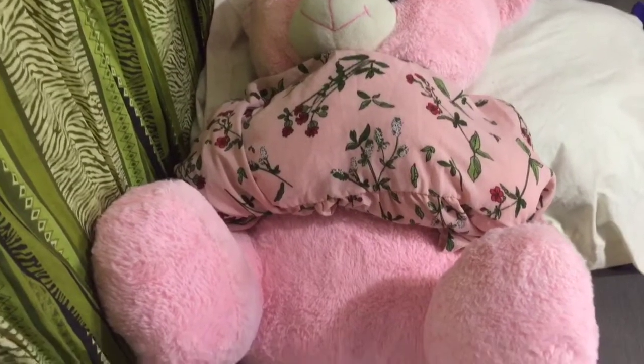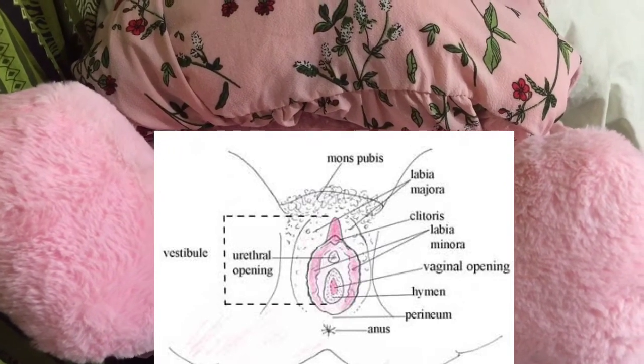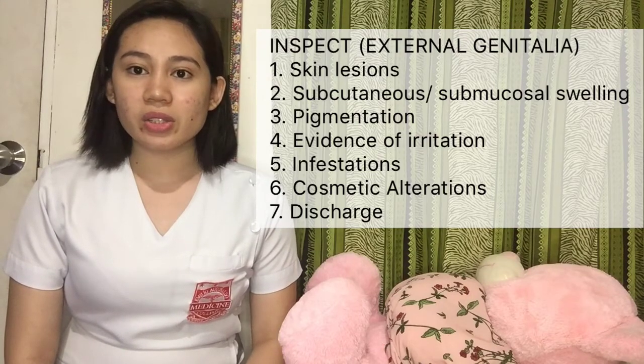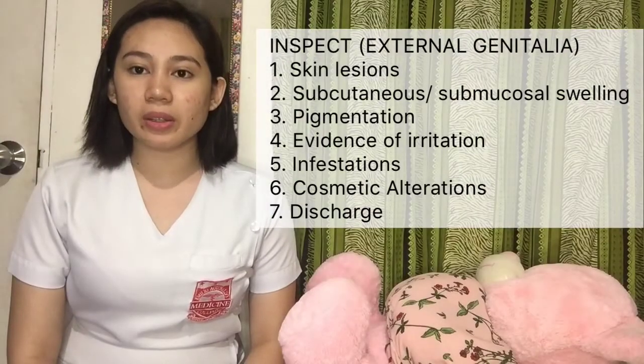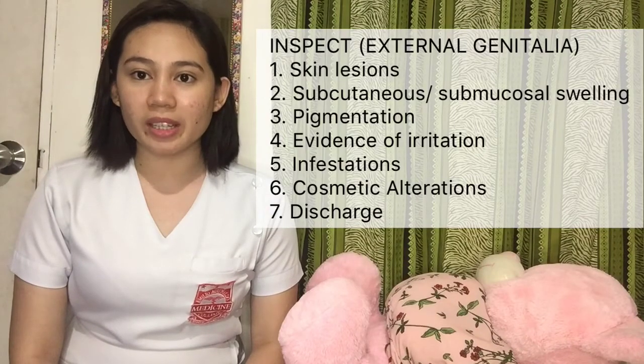For the inspection of external genitalia, it is important to know the anatomy because we will identify the parts of each. What are the things we need to inspect? Number one: skin lesions — are there any pustules, warts, or scars? Second: subcutaneous or submucosal swelling. Third: pigmentation — is it normal or is there any leukoplakia involved?